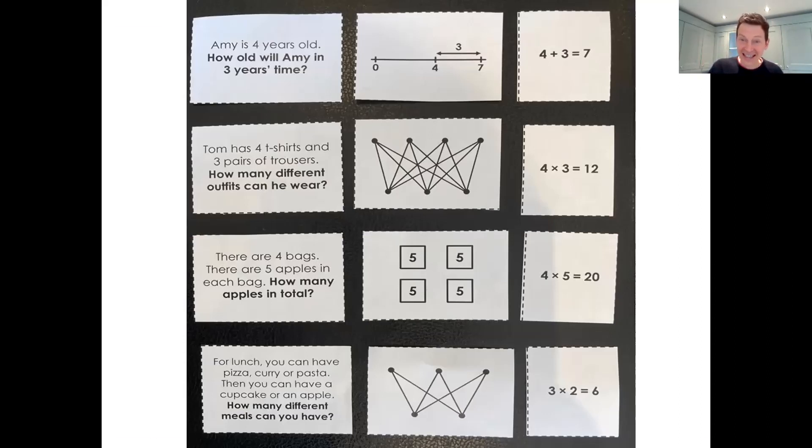Now that led in then to Task C. And in this instance, Lily starts off by drawing for Rob the five jumpers, and then with the dark dots, the two trousers, and then counts from dot to dot to dot and works out that that's 10, again using this initially counting strategy. And then, it's quite hard to see from this picture, but she actually drew then a four and a three and did the same thing for Jack.